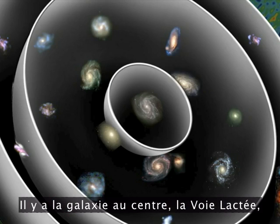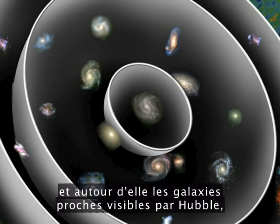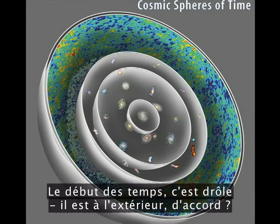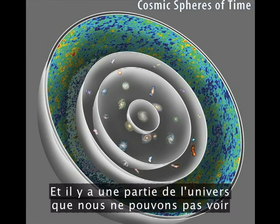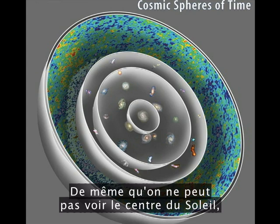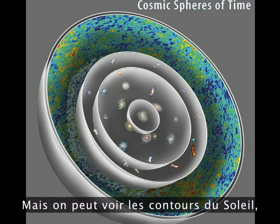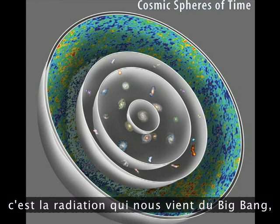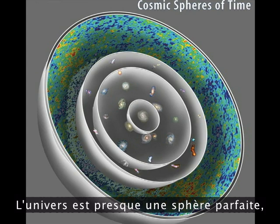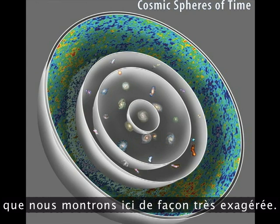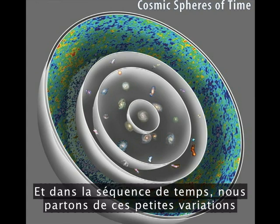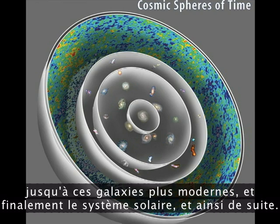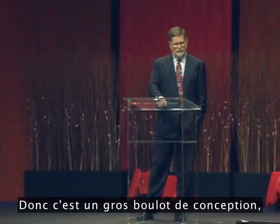I have a more artistic impression of this: the galaxy in the middle is the Milky Way, surrounded by nearby Hubble galaxies, with spheres marking different times. The beginning of time is on the outside. There's a part of the universe we can't see because it's so dense and hot — light can't escape, like the interior of the sun. But we can see the edge, and that radiation from the Big Bang is incredibly uniform. The universe is almost a perfect sphere, but with tiny variations shown here in great exaggeration. From those tiny variations, in a time sequence, we go from these to irregular galaxies and first stars, to more advanced galaxies, and eventually solar systems. It's a big design job.